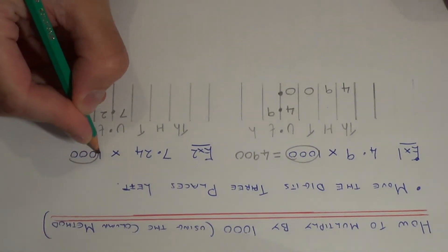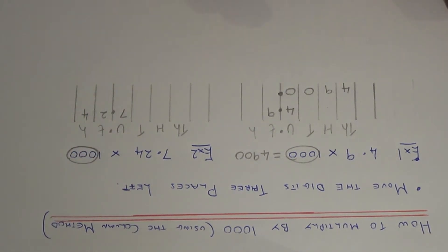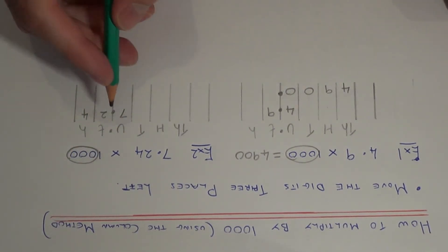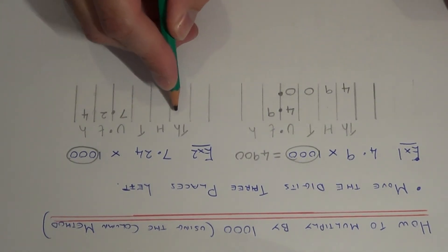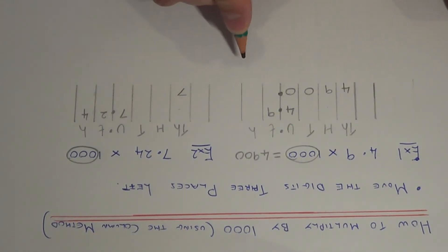So again, we're multiplying by a thousand, so we move the digits three places to the left. So let's move the 7 first. One, two, three. We'll drop the 7 in the thousands column.